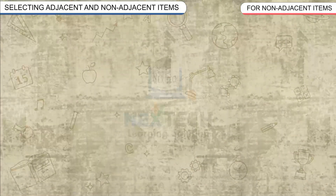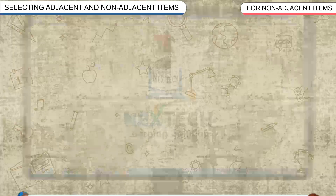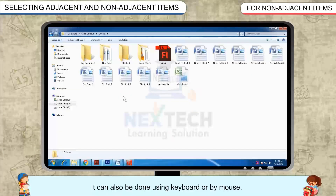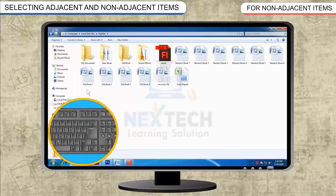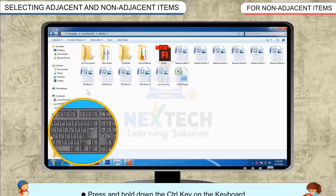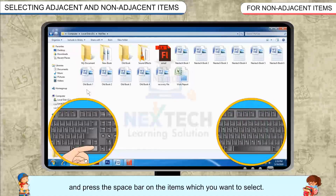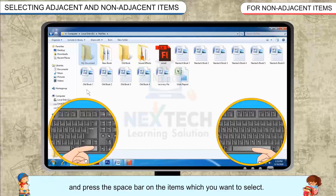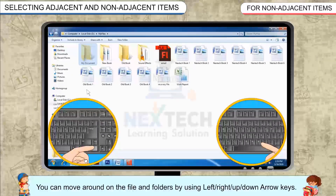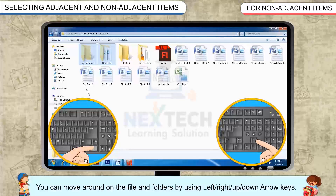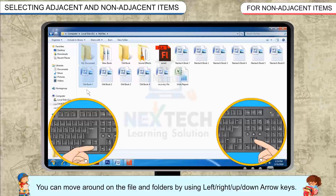For non-adjacent items, it can also be done using keyboard or by mouse. Using keyboard, press and hold down the Control key on the keyboard and press the Spacebar on the items which you want to select. You can move around on the files and folders by using left, right, up, or down arrow keys.